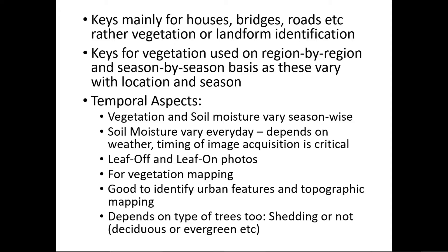Coming to the temporal aspects in aerial photography — parameters like vegetation and soil moisture keep varying season-wise. These temporal aspects largely affect the identification of features. There may be leaf-on or leaf-off seasons, and you might not be able to identify a particular vegetation at a particular site during a particular season. Similarly, soil moisture also varies seasonally — in the rainy season areas stay wet, and in the dry season they may be dry throughout.